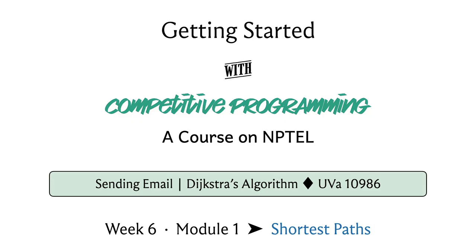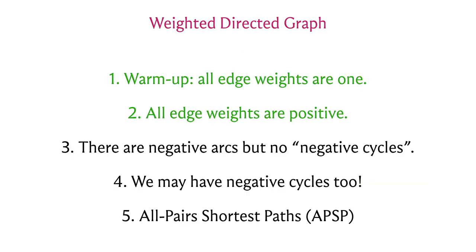Welcome back to the last segment of the first module in week six on shortest paths. We have been talking about the single source shortest path problem throughout this module. So far we figured out what to do when all the edge weights are uniform and when all the edge weights are non-negative. Now the focus is going to be the case when we do allow for negative edge weights, but we continue to avoid what are called negative cycles.